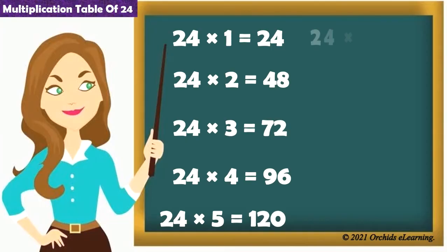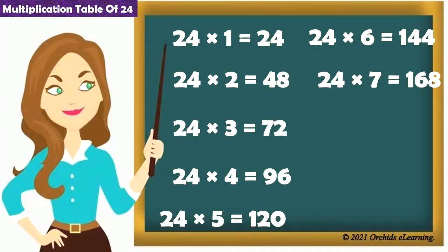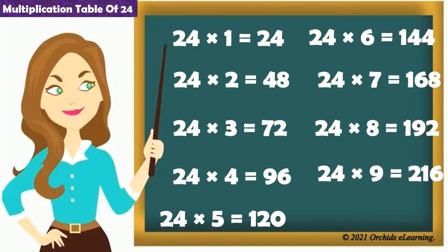24 6s are 144. 24 7s are 168. 24 8s are 192. 24 9s are 216. 24 10s are 240.